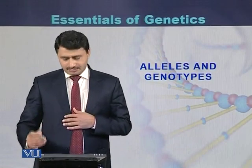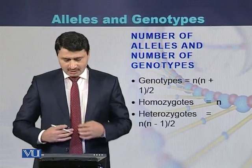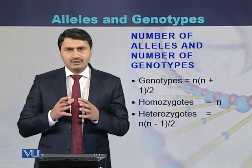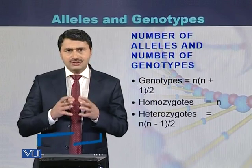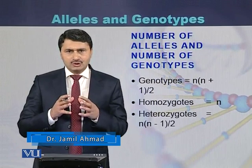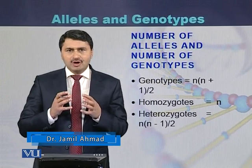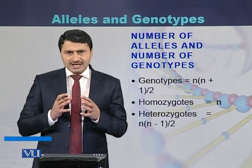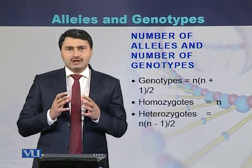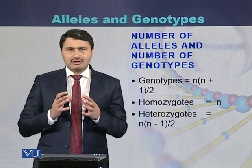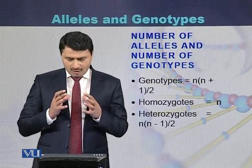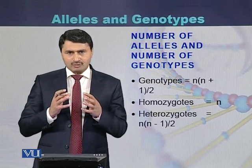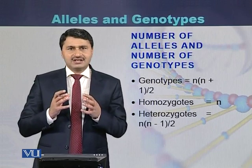Alleles and genotypes. Based on the number of alleles, the number of genotypes can be calculated. There is a formula used for this calculation: n(n+1)/2, where n is the number of alleles, and this also gives the number of homozygotes. To calculate the number of heterozygotes, the formula is n(n-1)/2.